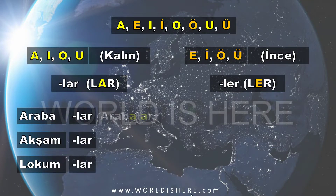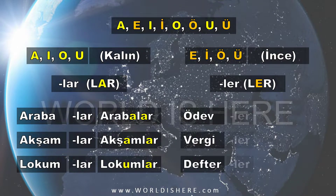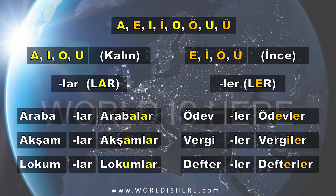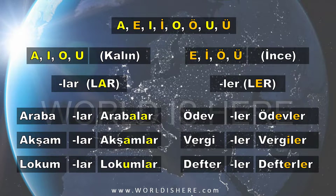According to büyük ünlü uyumu, we learned how to make words plural. To make them plural we add -lar or -ler, but how do we decide? We check the last vowel: if it's kalın we use -lar, if it's ince we use -ler. For example: araba, akşam, lokum — all have kalın vowels, so we add -lar. Ödev, vergi, defter — all ince, so we add -ler. Remember?